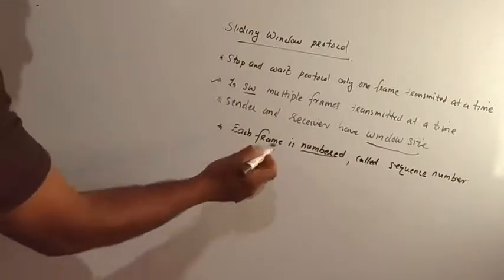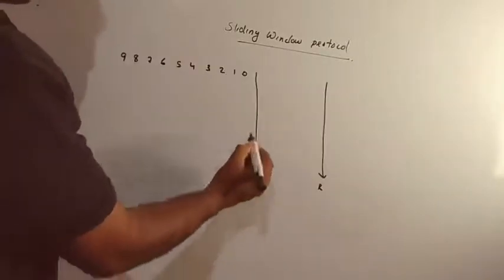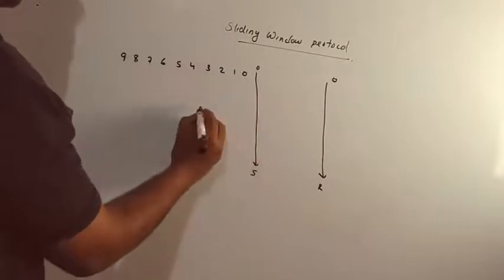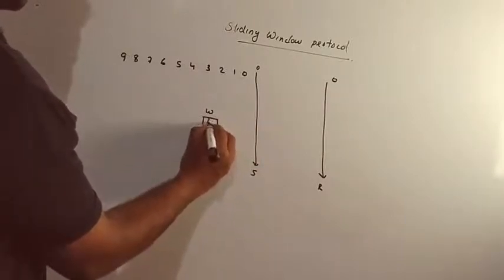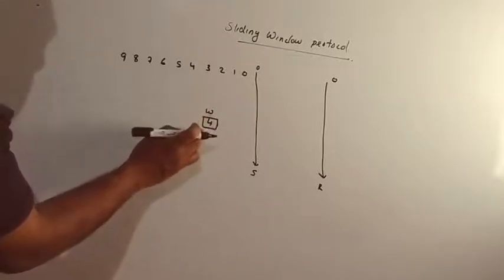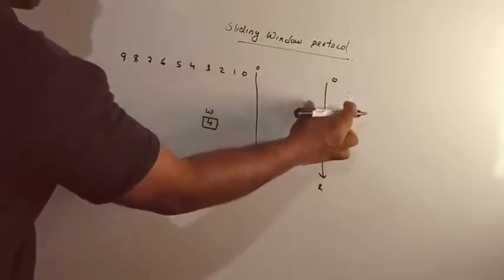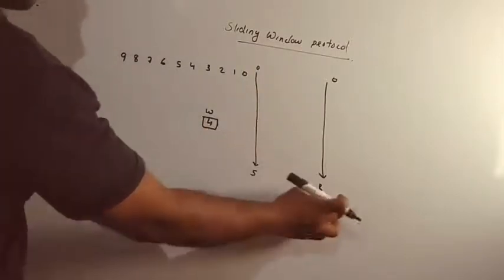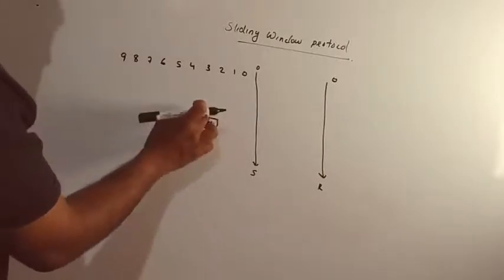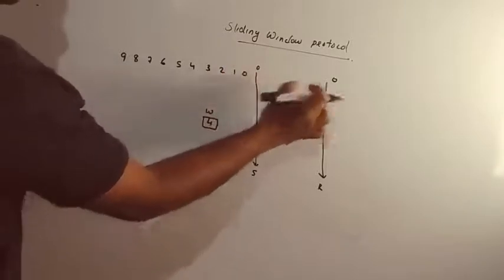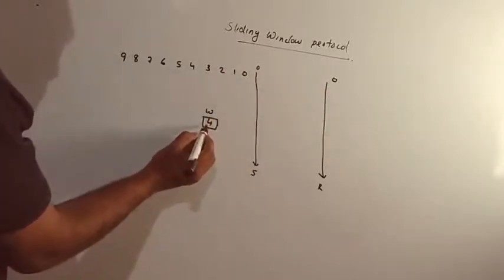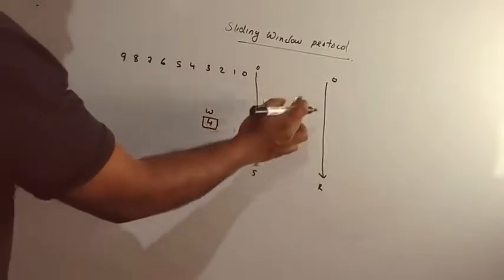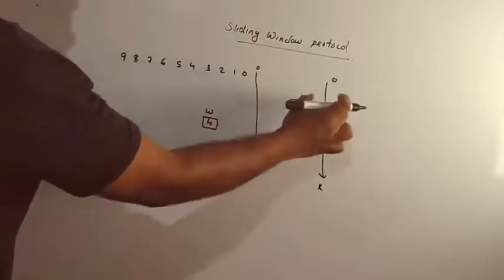We have to send frames along the timeline. The sender and receiver communicate. For example, with a window size of 4, we can send 4 frames without getting an acknowledgement. That is important — we can send 4 frames from sender to receiver without waiting for an acknowledgement.